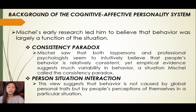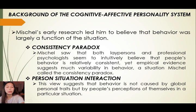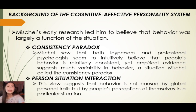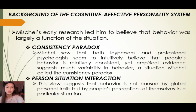Mischel's theory emphasizes the concept of person-situation interaction. This view suggests that behavior is not caused by global personal traits, but by people's perceptions of themselves in a particular situation. This theory is not focused on personality traits but on particular situations in order to predict a person's behavior.